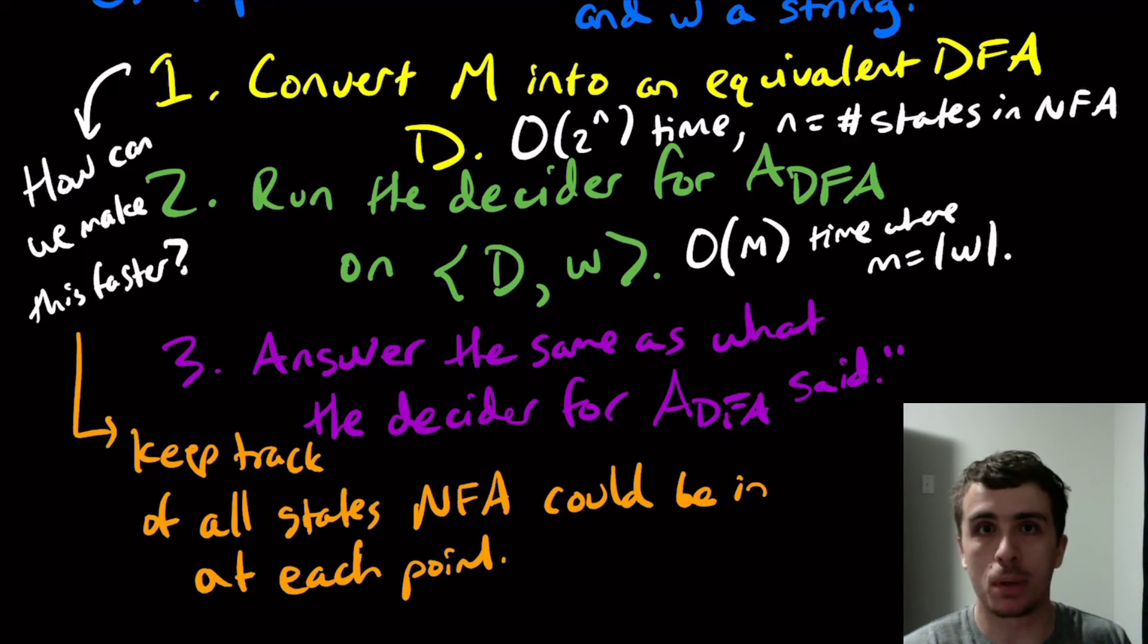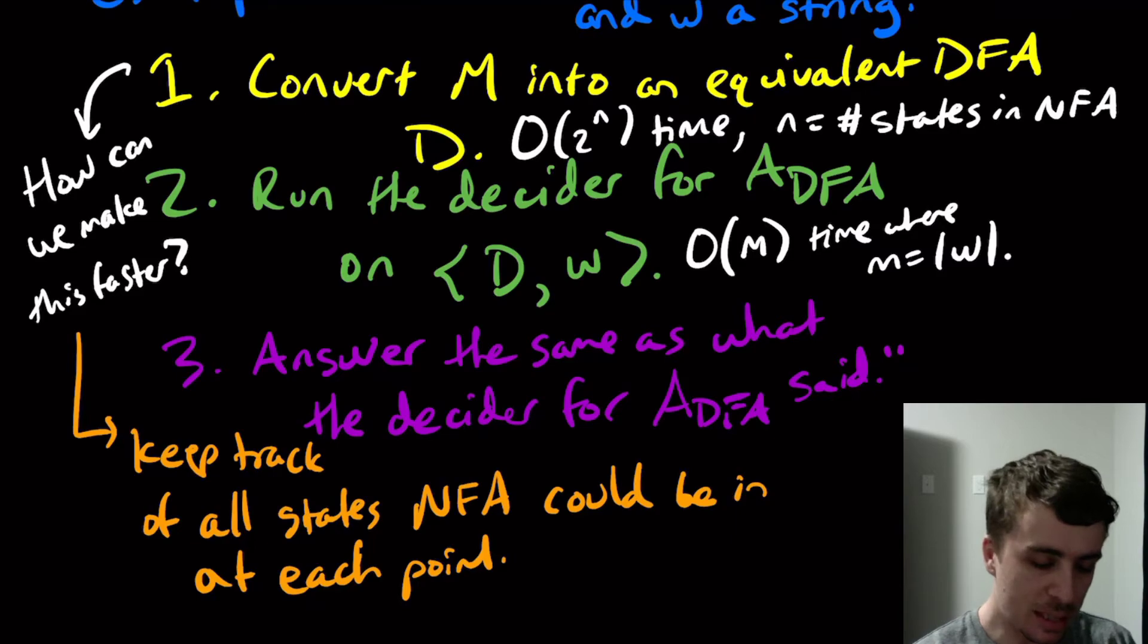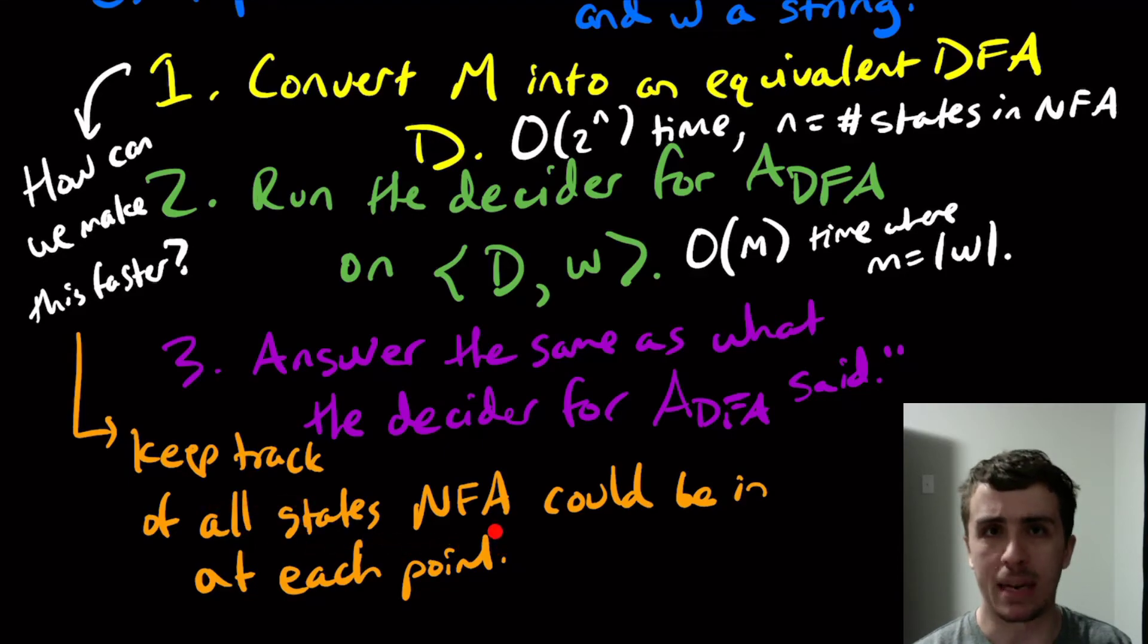They weren't reachable when we were converting it. So sometimes some of those states are just not possible. But even if all of them are possible, we're only in one of them at a time in the DFA that we're making. So why don't we just keep track of the states themselves? Because I don't need to keep track of anything else. I just need to know what states the NFA is currently possible to be in.